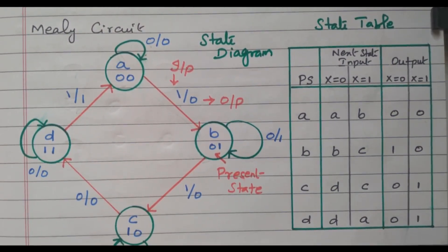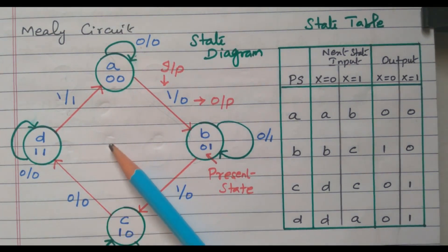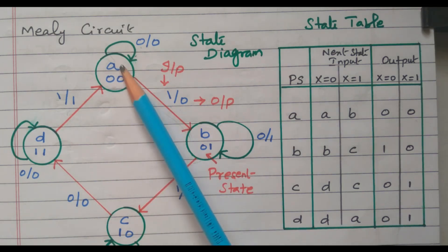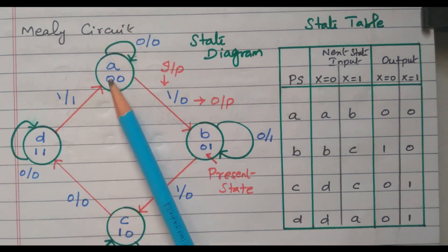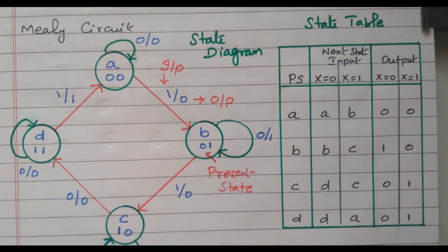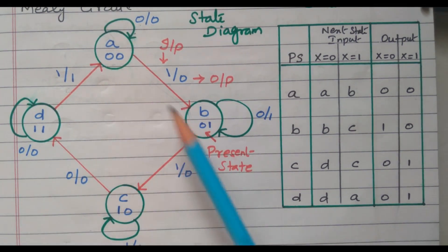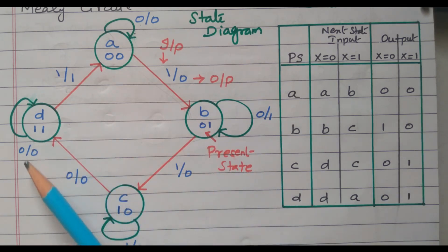In the Mealy circuit, the output depends upon the input as well as the present state of the flip-flop. This is the state diagram for the Mealy circuit. There are four states available: A, B, C, and D. Because there are four states, we have the binary representations 00, 01, 10, and 11 for the present state.